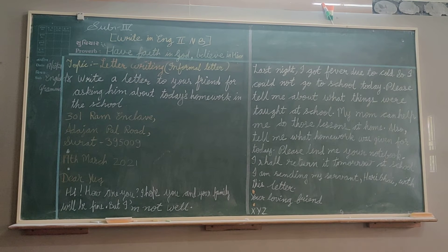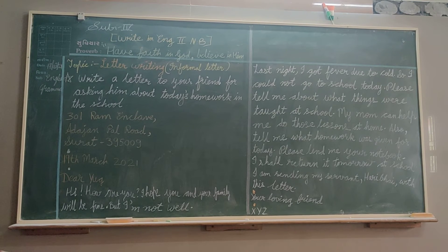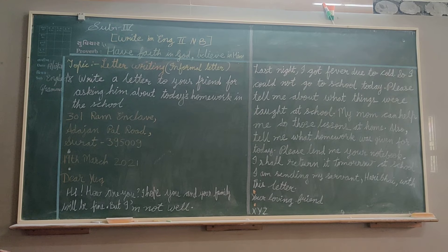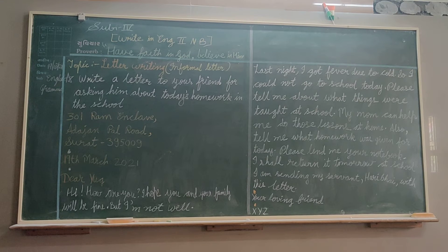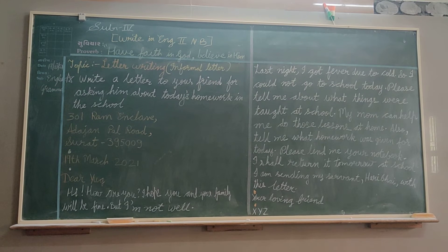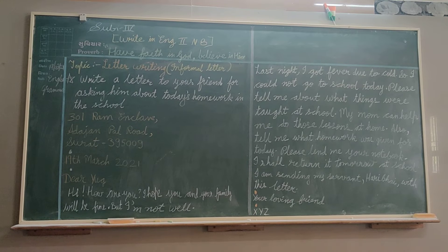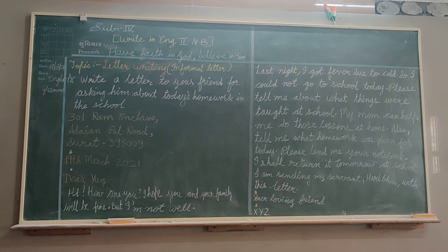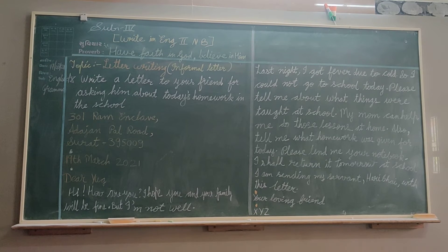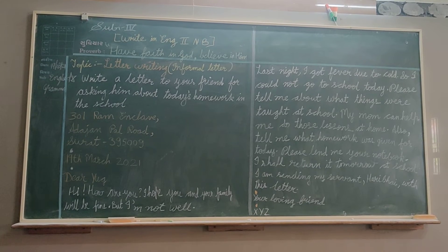Now in informal letters, first of all you have to write your address, and then give one line, and then write your date, and then give one line, and then write 'Dear' followed by whatever your friend's name is.